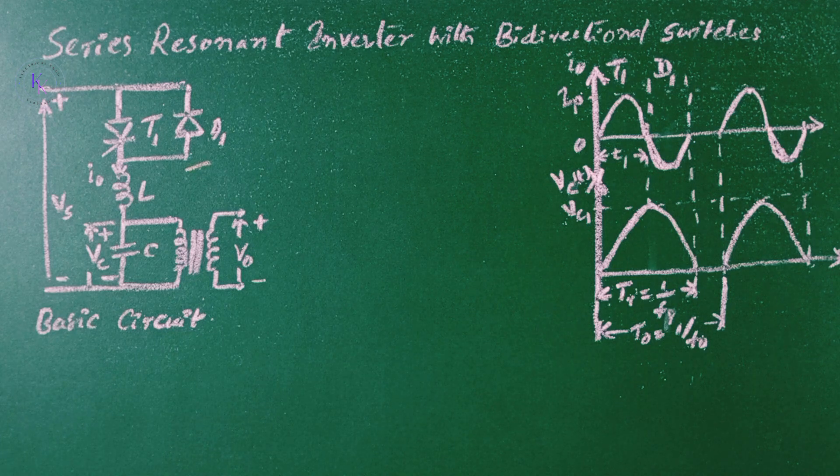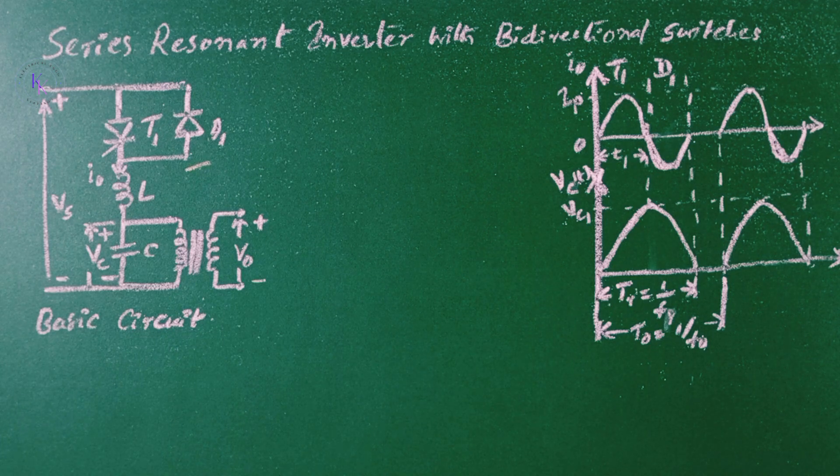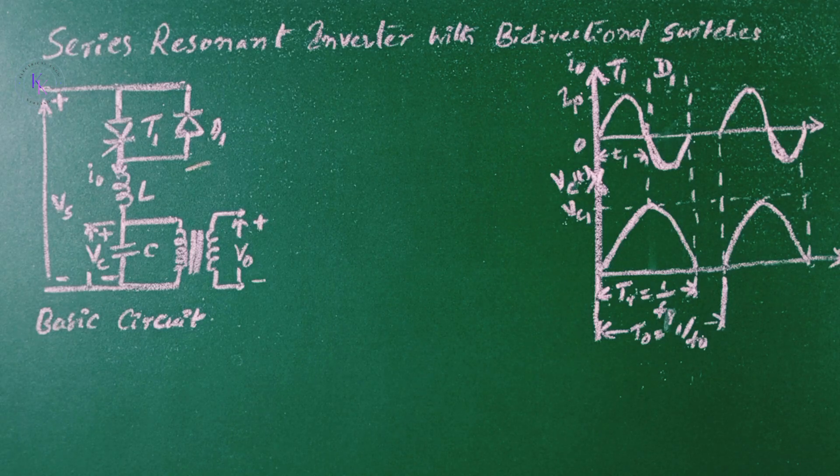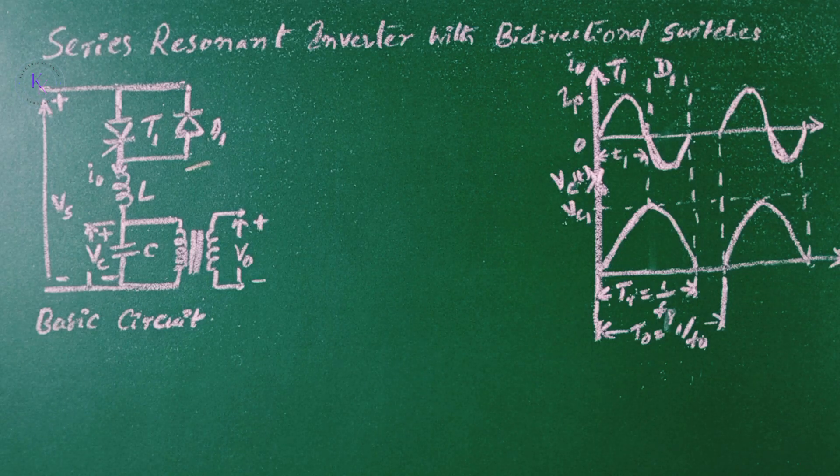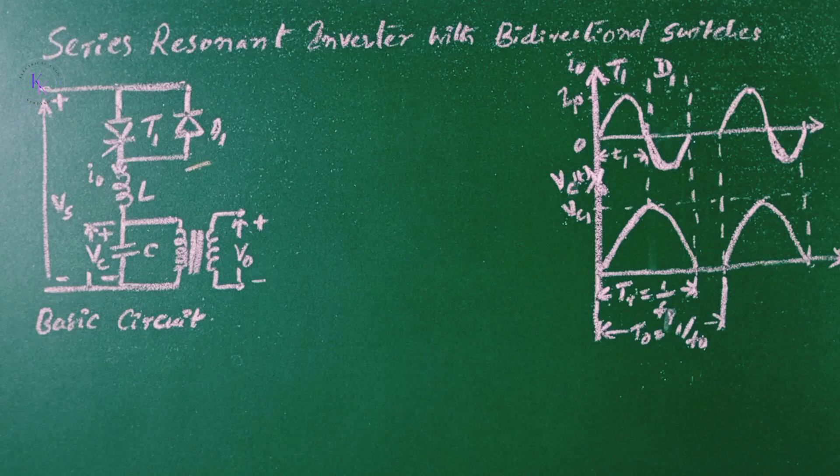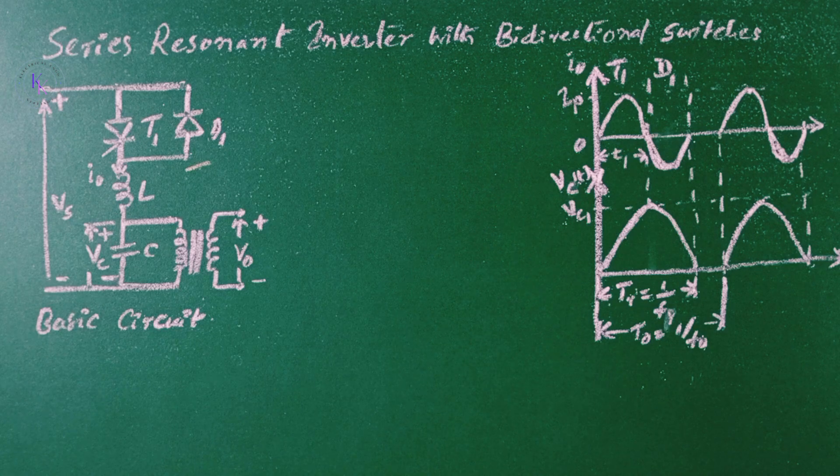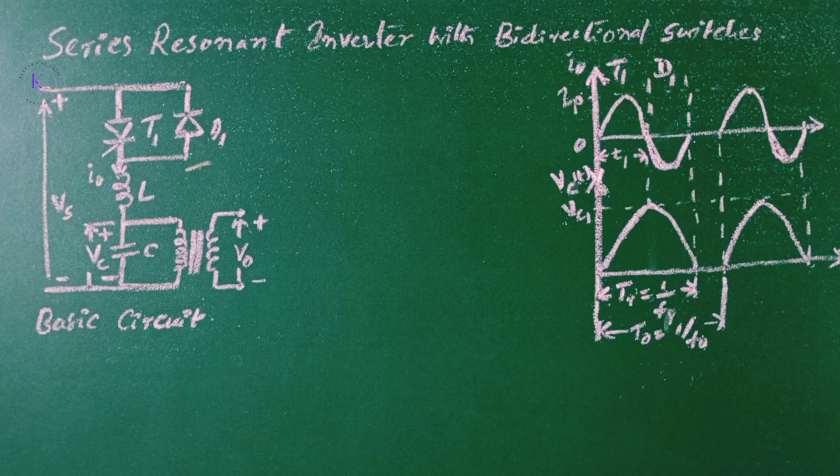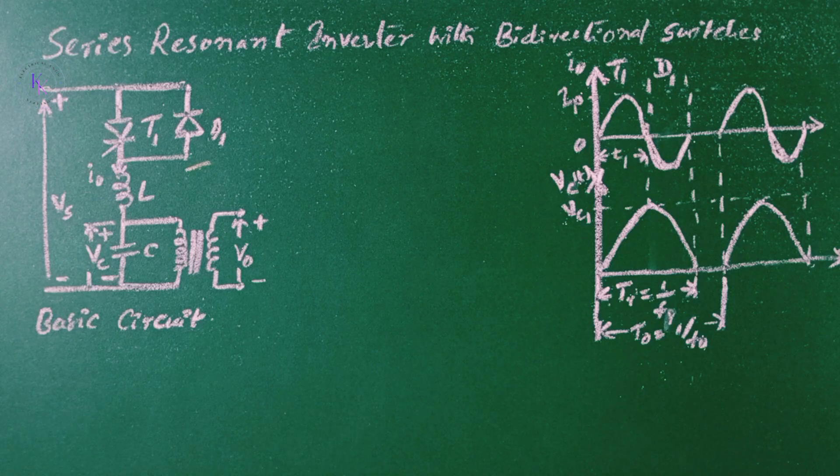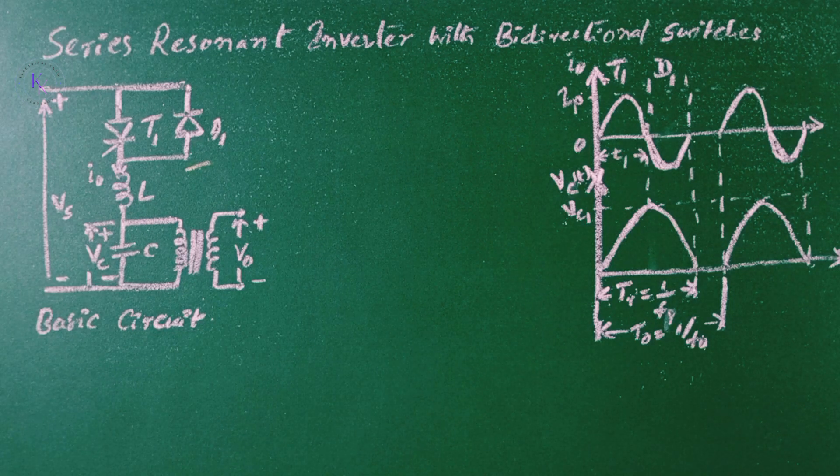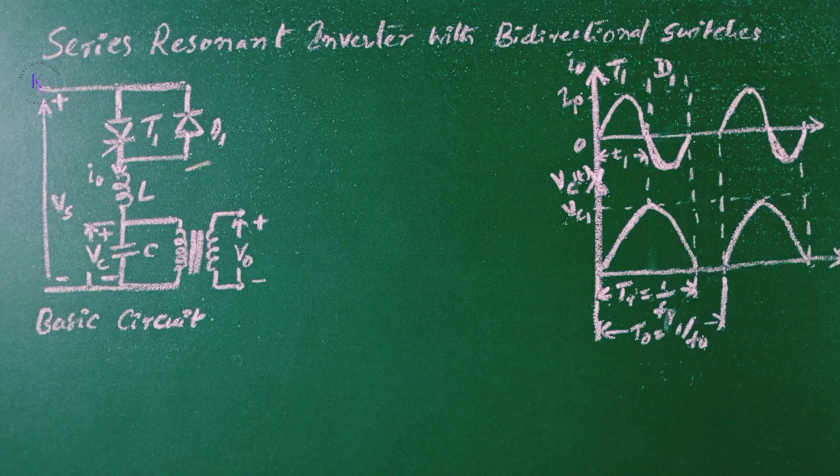The diode D1 should be connected as close as possible to the thyristor and the connecting leads should be minimum to reduce any stray inductance in the loop formed by T1 and D1. As the reverse voltage during the recovery time of the thyristor T1 is already low, typically it is 1 volt, any inductance in the diode path would reduce the net reverse voltage across the terminals of T1 and the thyristor T1 may not be turned off. To overcome this problem,